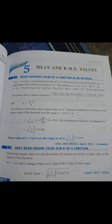What is the first formula? It means mean value. There are three formulas: mean value, mean square value, and root mean square value — that is, RMS value.